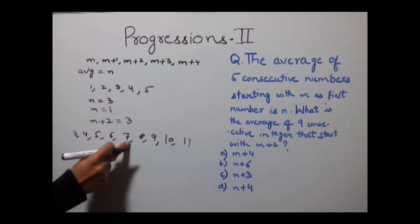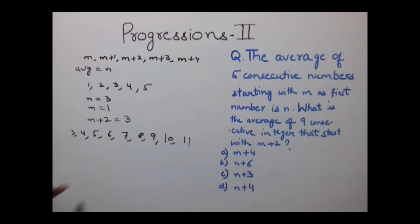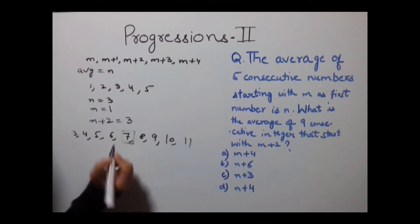That's 1, 2, 3, 4, 5, 6, 7, 8, 9, whose average would equal 7.